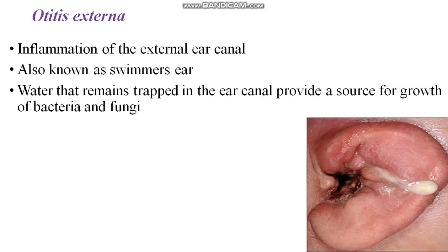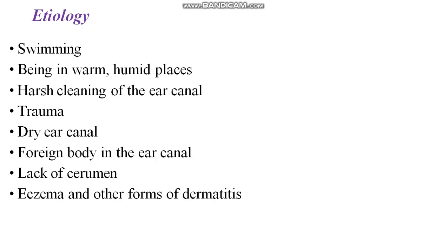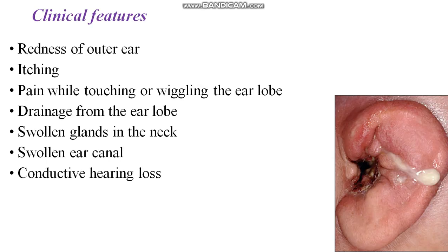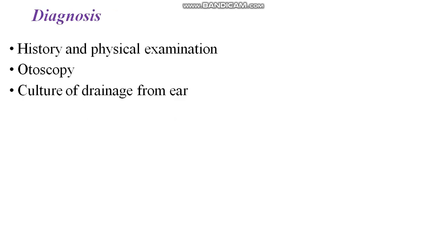In summary, otitis externa is the inflammation of the external ear canal which usually happens due to swimming when water is trapped in the ear, being in warm humid places, harsh cleaning of the ear canal, trauma, dry ear canal, foreign body in the ear canal, lack of cerumen, eczema, and any other form of dermatitis. The clinical features are redness of the outer ear, itching, pain while touching, drainage, swollen glands in the neck and ear canal, and conductive hearing loss.